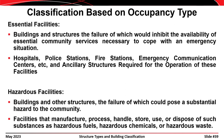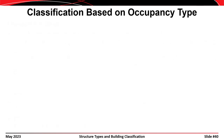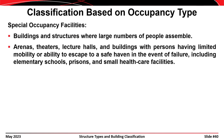Hazardous facilities are buildings or structures whose failure would cause adverse effects on the surrounding community — for example, a nuclear power plant that could release radiation in an earthquake or tsunami. Chemical plants and hazardous waste facilities are also designed to special criteria. Special occupancy facilities are places where large numbers of people congregate — arenas, theaters, lecture halls — where people are gathered in one area and cannot evacuate quickly.